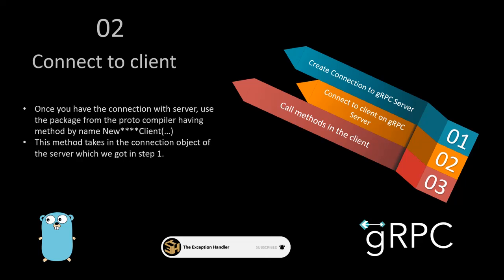To create the actual stub, you call the new client method of the service you have already created using protocol buffers. The method follows the naming convention: 'New' + the service name from your proto file + 'Client'. On the client side, you call this method by passing in the connection or channel obtained from the first step.